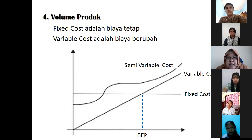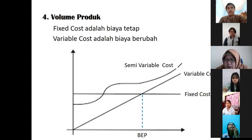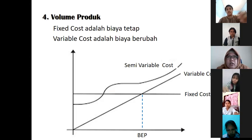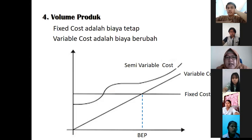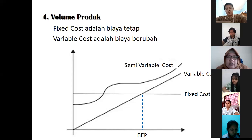Ingat aja kalau bikin bolu, bahan bakunya itu kayak tepung, telur, gula, apalagi listrik, air, itu kan tergantung dengan jumlah yang mau kita buat, itu namanya biaya variable. Biaya tetapnya, ya itu waktu kita beli mixer, beli oven, beli loyang, kita hanya keluarkan uang sekali. Mau berapa pun kita produksikan, ya itu aja biayanya. Atau contohnya kayak kita sewa ruko, biaya sewa gedungnya itu tetap 3 juta per bulan.